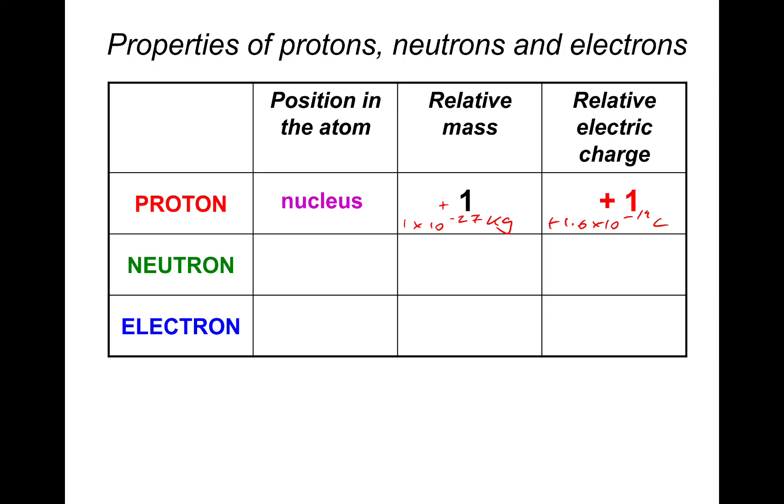What about a neutron? The position in the atom, well, the neutron's in the nucleus with the protons. Relative mass, a neutron is essentially the same size, or the same mass as a proton. So we call that one as well. It is in reality a tiny amount different. Relative electric charge, it's got zero charge. Neutron, you can remember that as neutron neutral.